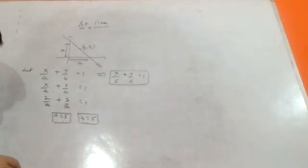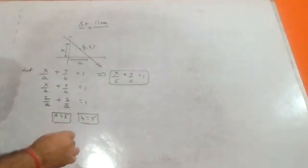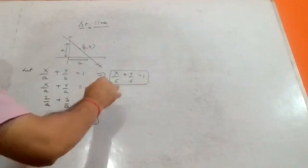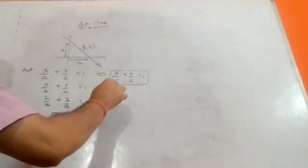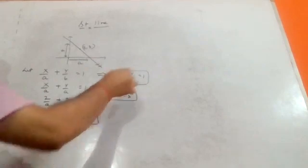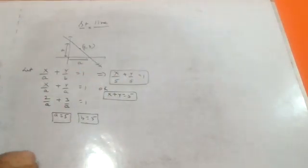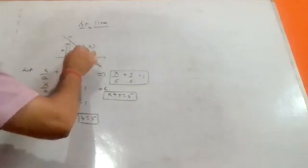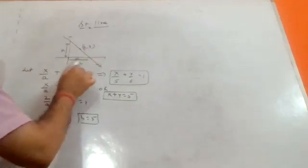This is your required line — the equation of the line passing through the given point with equal intercepts, where a plus b equals eight.